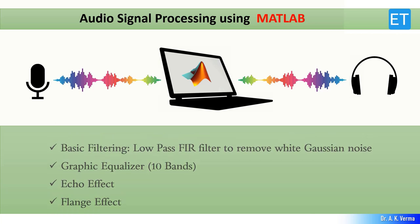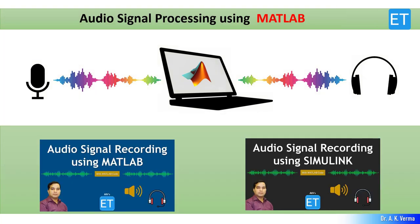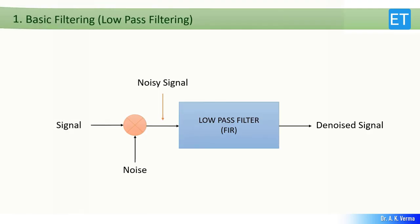Before going ahead, I recommend you to watch my previous two videos where I explained how you can record audio signals using MATLAB and Simulink — links are given in the description. In low-pass filtering, we are assuming that our audio signal is corrupted by white Gaussian noise, and this noise will be reduced by the FIR low-pass filter.